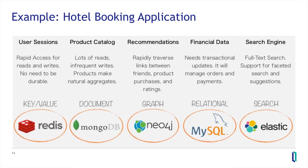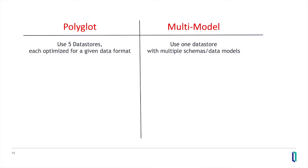If you were to build this application using polyglot persistence, you've got six different kinds of data stores. There are lots of systems in the world built this way. You work on each part of the system and stitch them together. The basic trade-off here is between a polyglot pattern — using five different data technologies in this example — or something that gives you a single data store that lets you work with all those models.